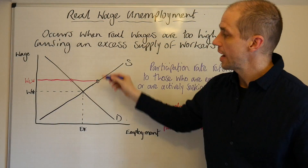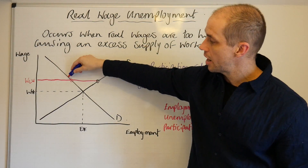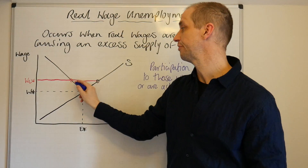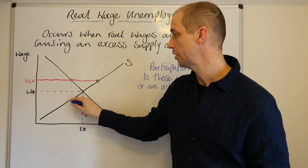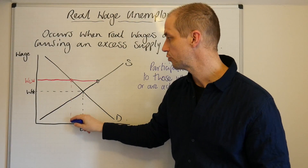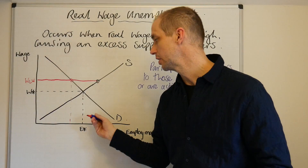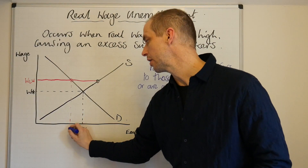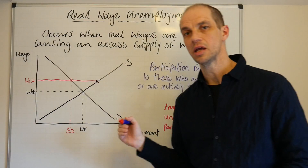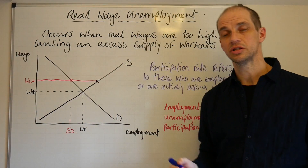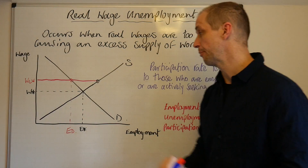We can also see that this new labour supply curve crosses the demand curve at roughly the red dot I've just drawn in, which I'm labelling ED — that is the employment demanded in the labour market right now.